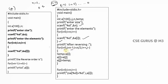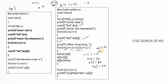a[0] is swapped with a[n-1], a[1] with a[n-2], and so on. So: for(i=0, j=n-1; i<n/2; i++, j--). Notice the comma between initializations, not a semicolon, and the condition is i<n/2. Inside the loop: temp = a[i]; a[i] = a[j]; a[j] = temp. For example, a[i] has 30 and a[j] has 80; after the swap, a[i] becomes 80 and a[j] becomes 30.